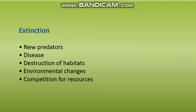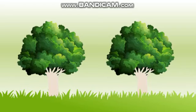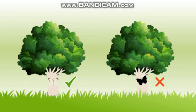An example of this is the peppered moth. At first, peppered moths varied in color — some were light and some were dark. Light moths were at an advantage because this allowed them to camouflage against the pale trees, enabling them to survive and reproduce. However, moths with a mutant black coloring were easily spotted and eaten by birds.